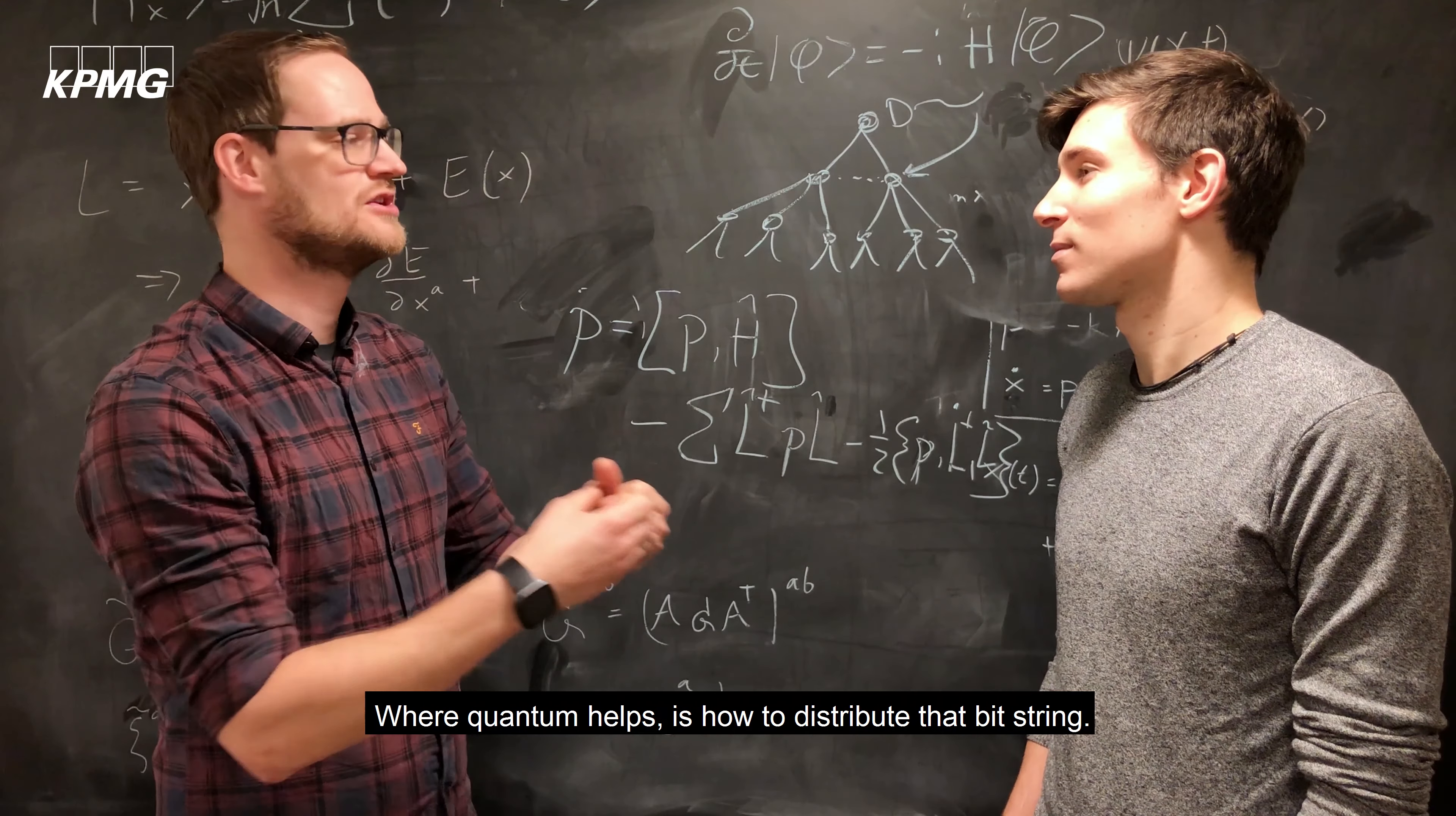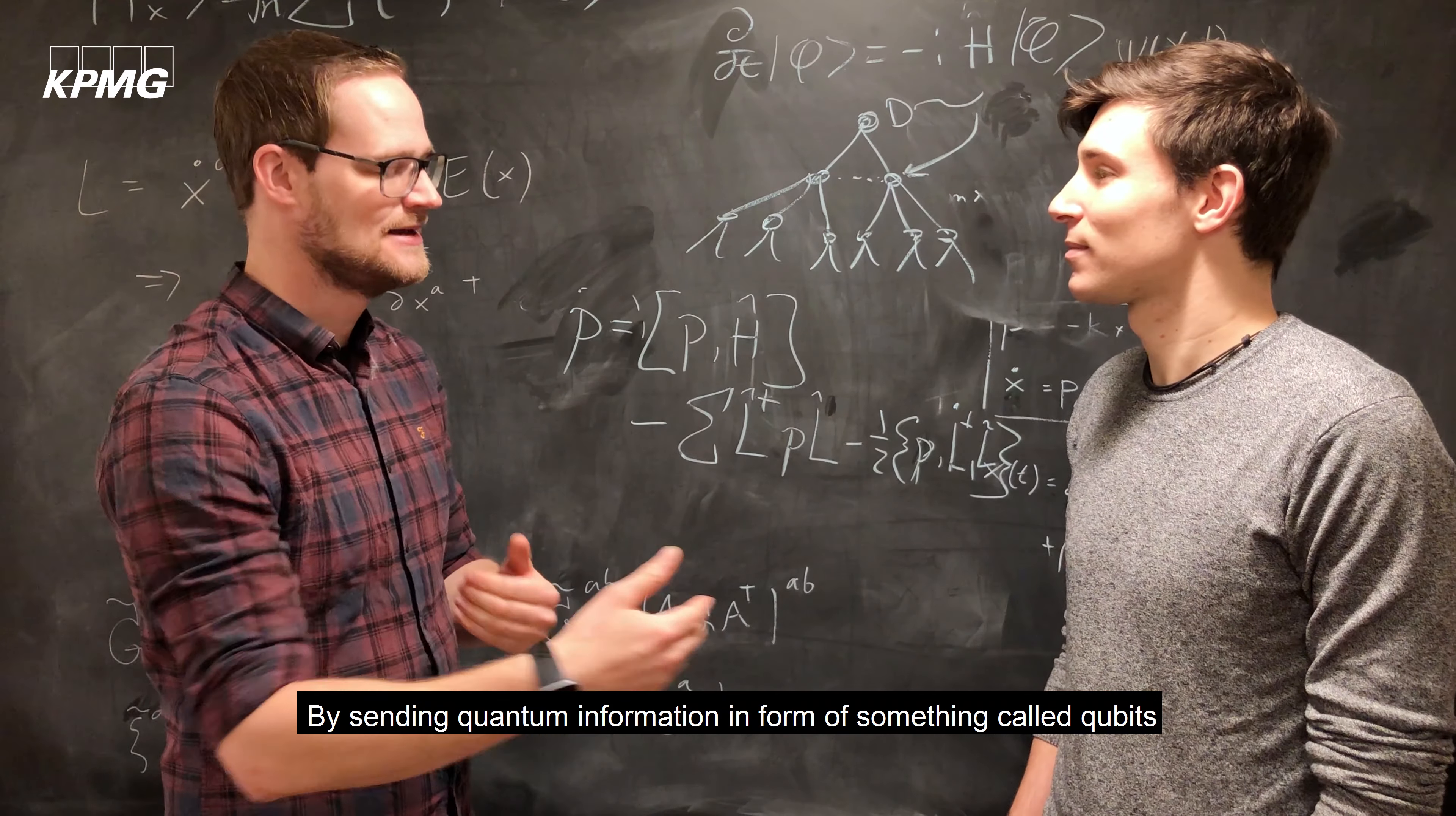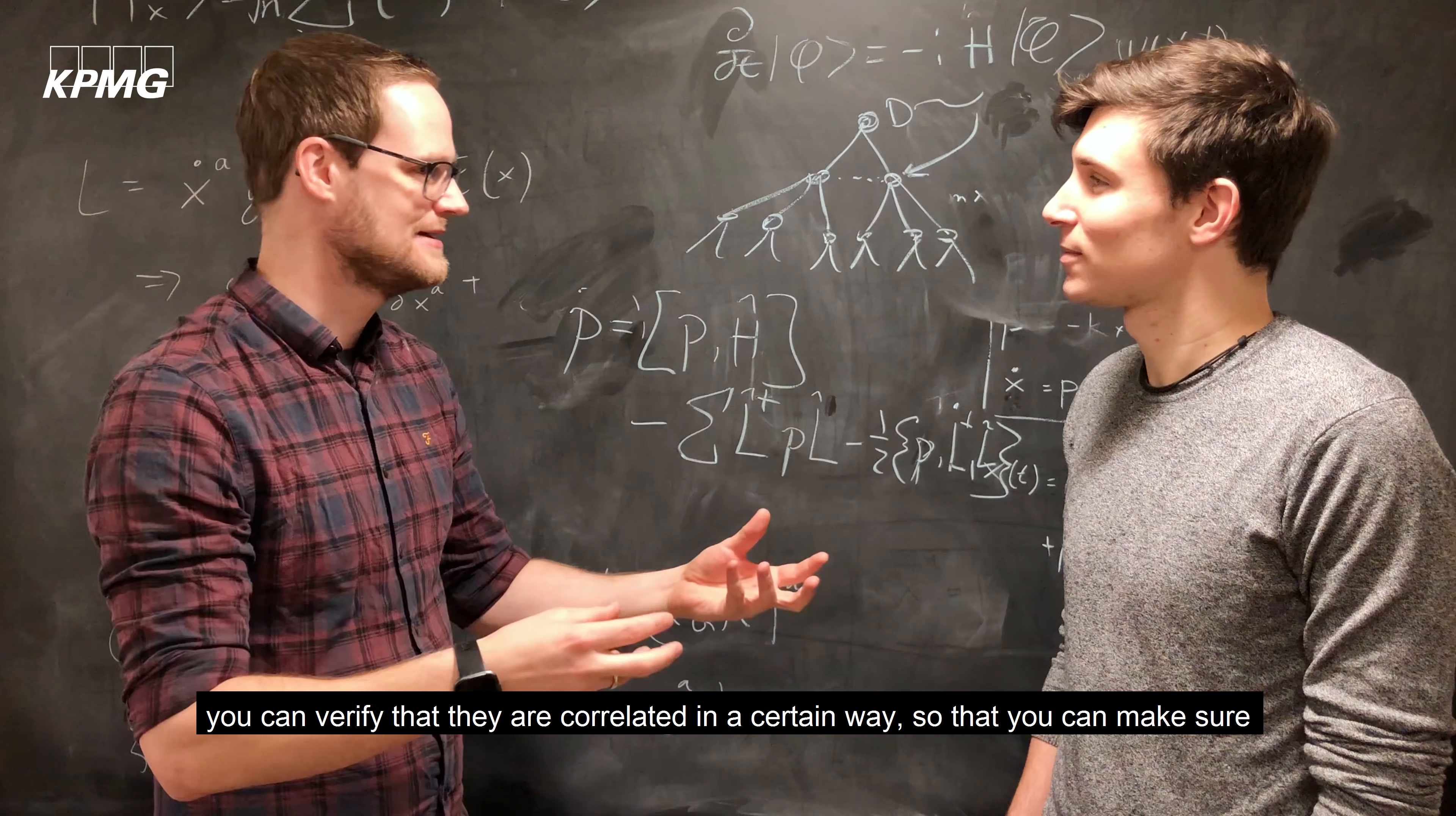Where quantum helps is basically how to distribute that bit string. By sending quantum information in the form of something called qubits, you can basically, by measuring on your quantum systems, verify that they are correlated in a certain way.